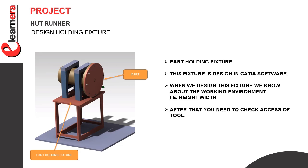When we design this fixture, we need to know about the working environment — that is height, width, and length. After that you need to check access of the tool. If tool access is confirmed, then we go on to design the top tube.